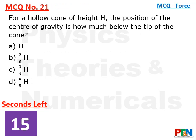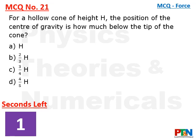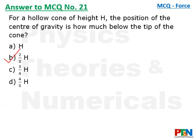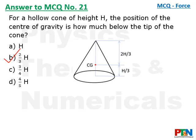Next MCQ: for a hollow cone of height h, the position of the center of gravity is how much below the tip of the cone? It is a very common question, also found in the Selina book. 15 seconds timer. The answer is option B. From the bottom, the CG is at a height of h/3, so from the tip it will be at a height of 2h/3. That is option B.